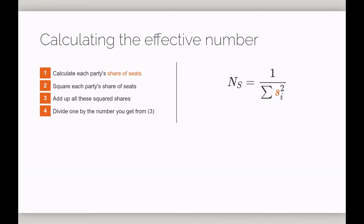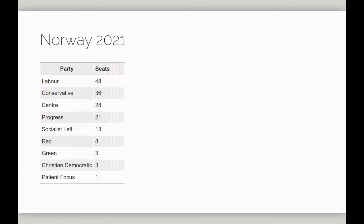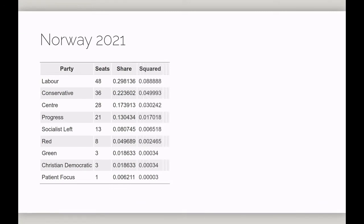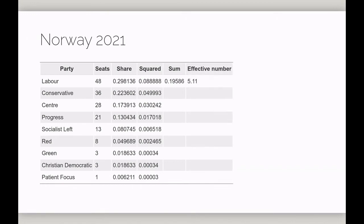Here's how that works for Norway. We take each party's share of seats, we square it, we then add up all these squared shares, and divide one by this number. This allows us to say that in 2021, Norway had an effective number of seat-winning parties of just over five.